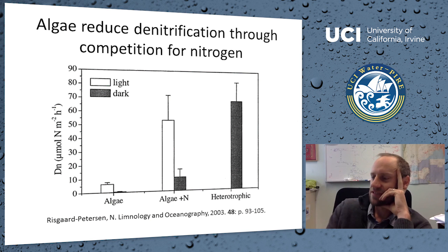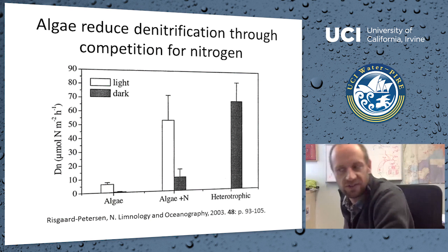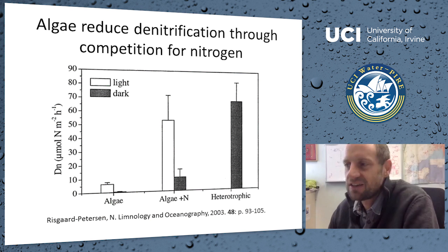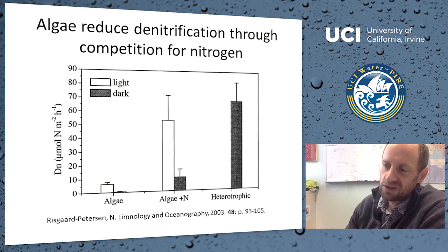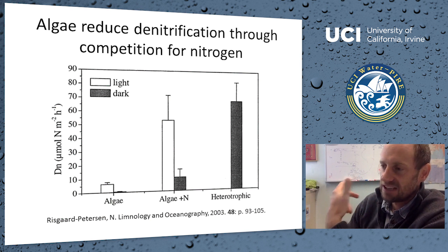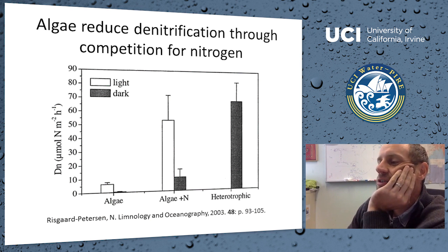Going back to the early 2000s, there was a debate over the effect of benthic microalgae on denitrification. The early thought was that benthic algae would actually increase denitrification, because algae when they photosynthesize increase the thickness of the oxic zone, which should increase nitrification. But against that stimulatory effect, we need to consider the algae's own assimilative demand for nitrogen — creating competition for nitrifying and denitrifying bacteria.